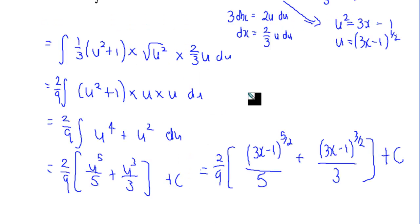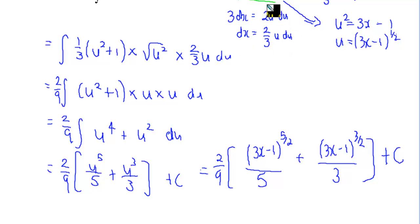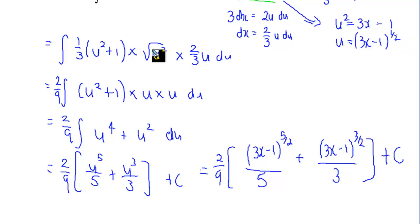Let's look at another example. This time we're given one where 3x is equal to u squared plus 1. So 3 dx is equal to 2u du, or dx is equal to two thirds of u du. We've got x and the square root of 3x minus 1. We can see that u would be equal to the square root of 3x minus 1, or u squared equals 3x minus 1.